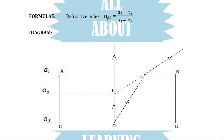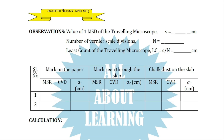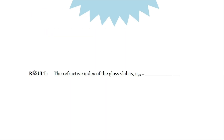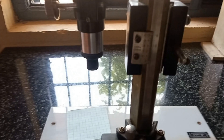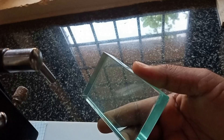The refractive index of the glass slab is measured using a traveling microscope. Now let us start the experiment. The apparatus that we are going to use are a piece of graph sheet and a glass slab.